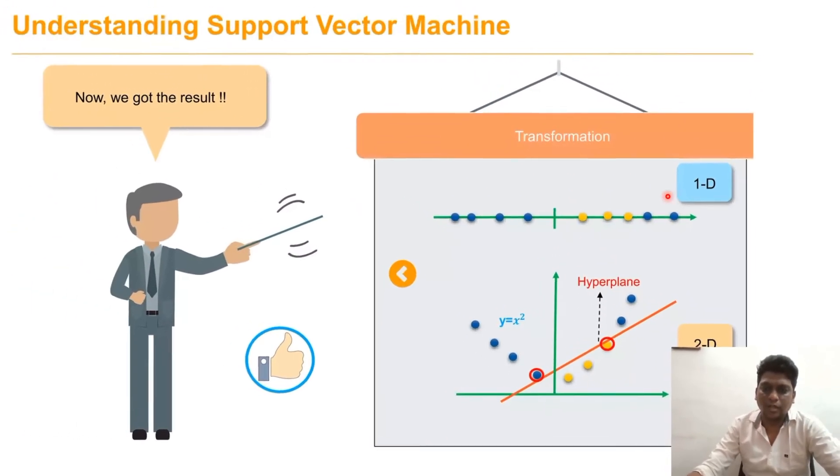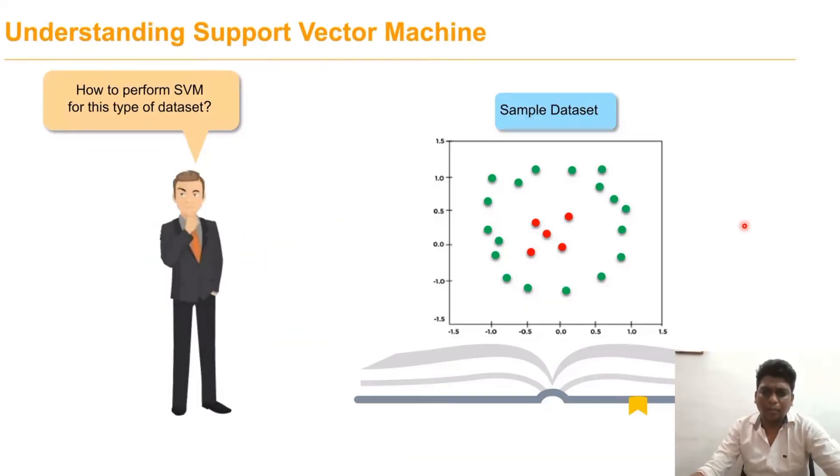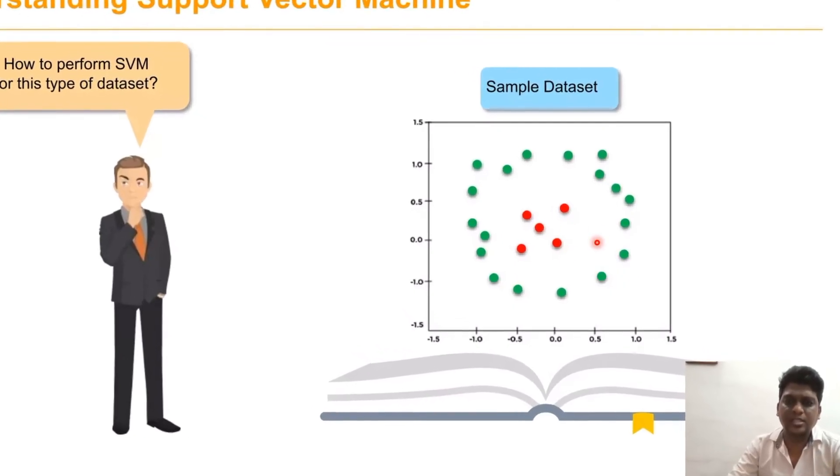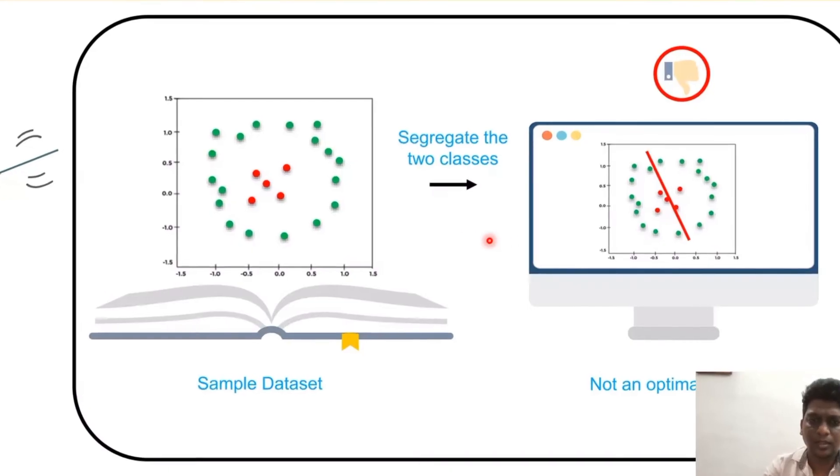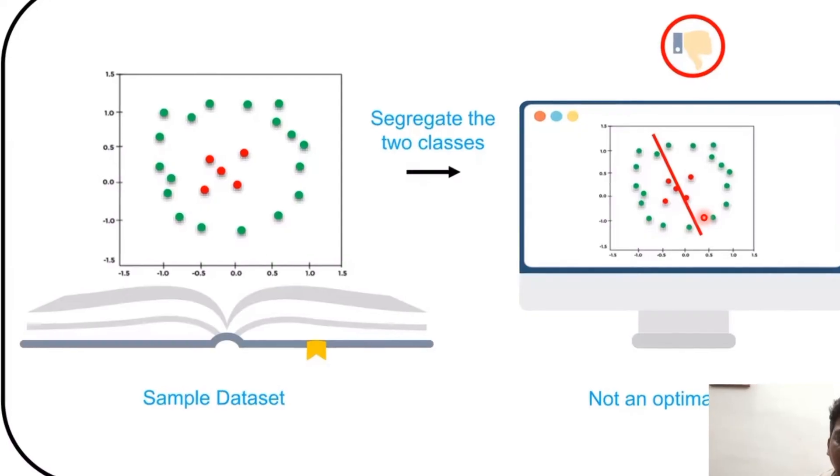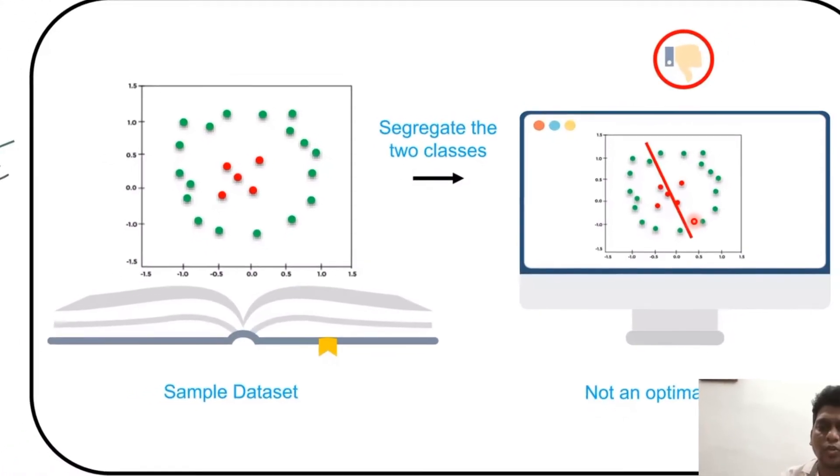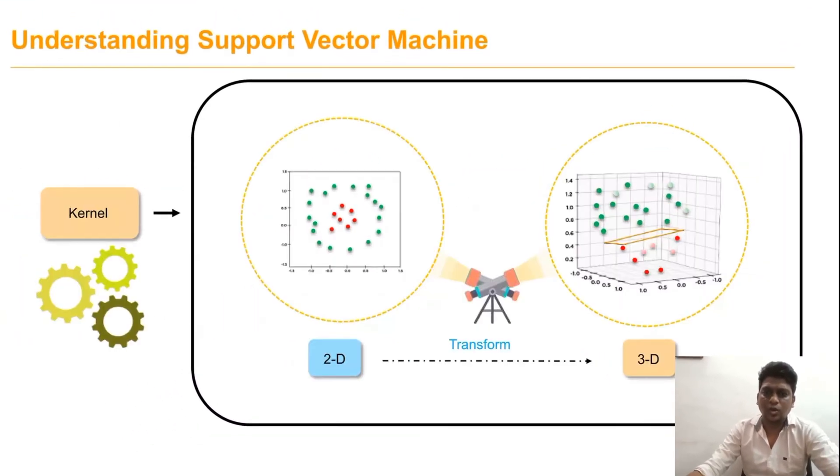This is how we convert the one-dimensional data into two-dimensional data—how we perform SVM for this type of data set. This is a two-dimensional data set, but how we can perform in this sample data set?